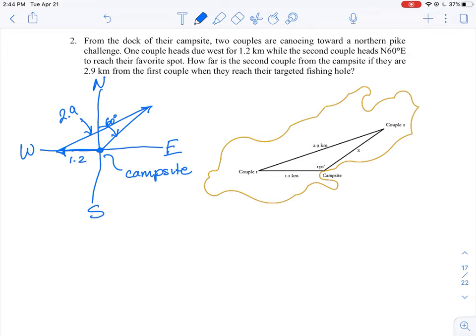Now what we're asked to do is we're actually asked to find how far is the second couple from the campsite. So how far is distance, and we're going from the campsite when they are 2.9 kilometers apart from the first group of people. So this is what we can consider to be x. That's what we're asked to solve.